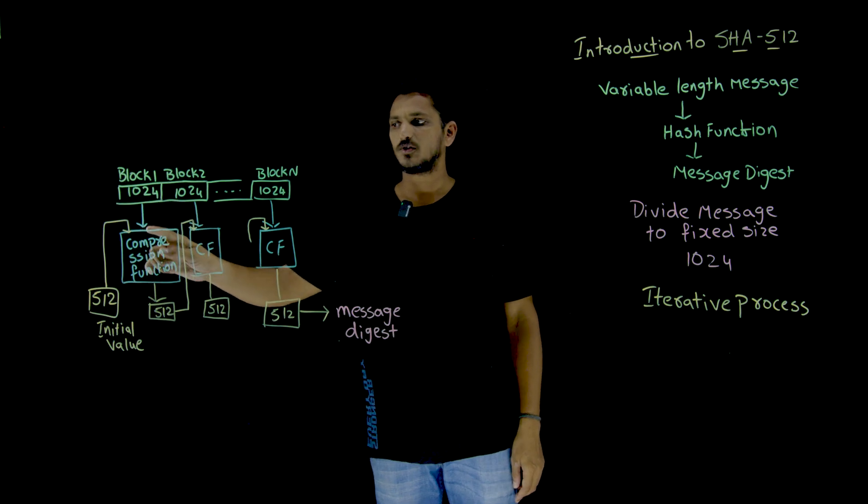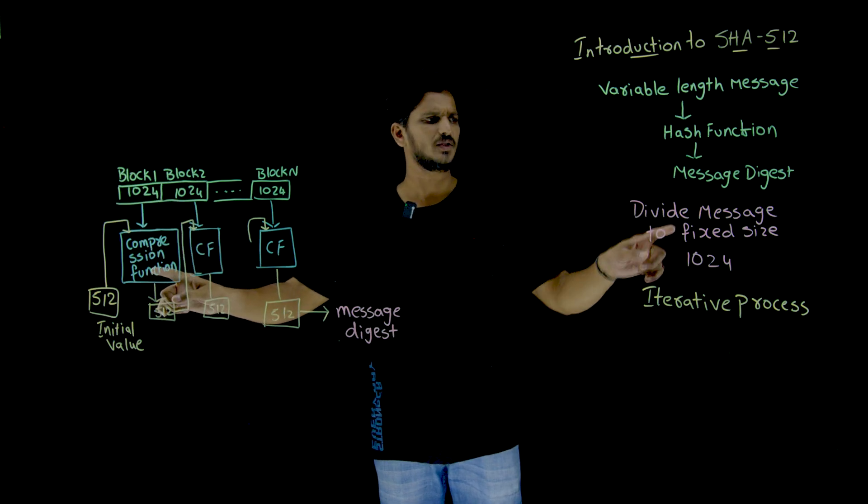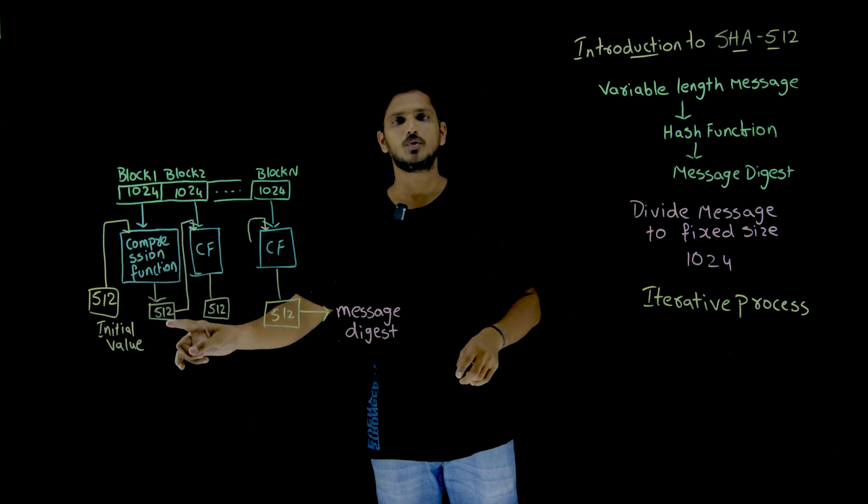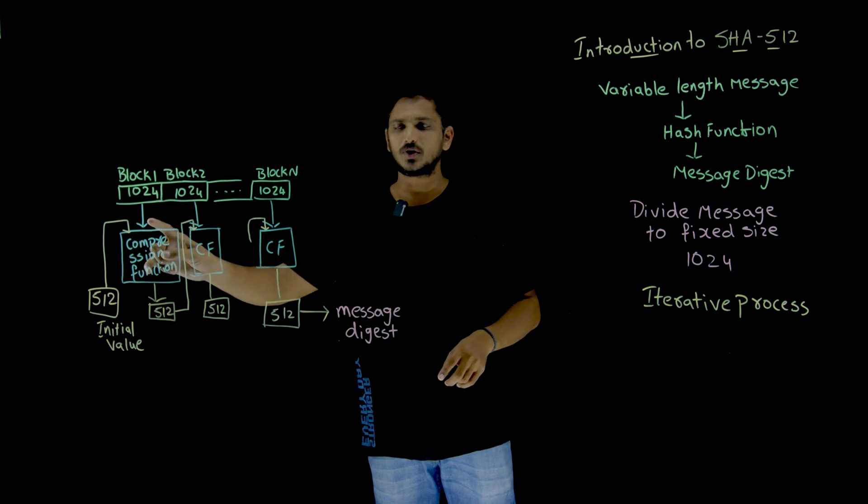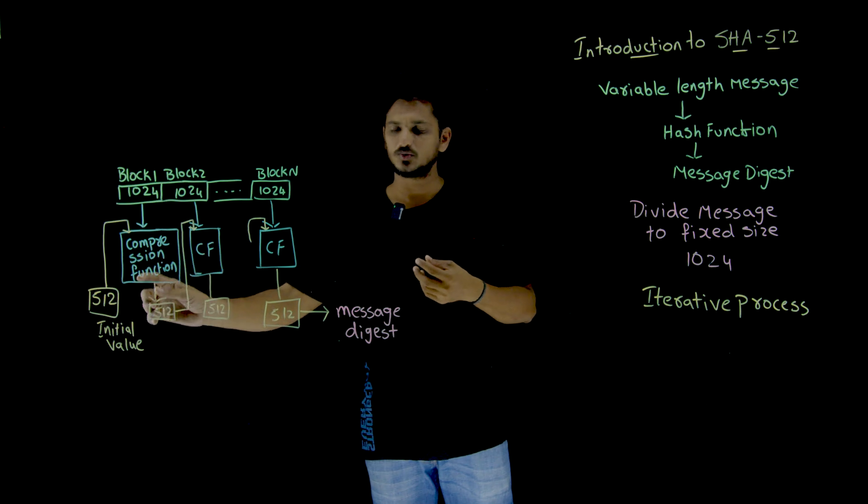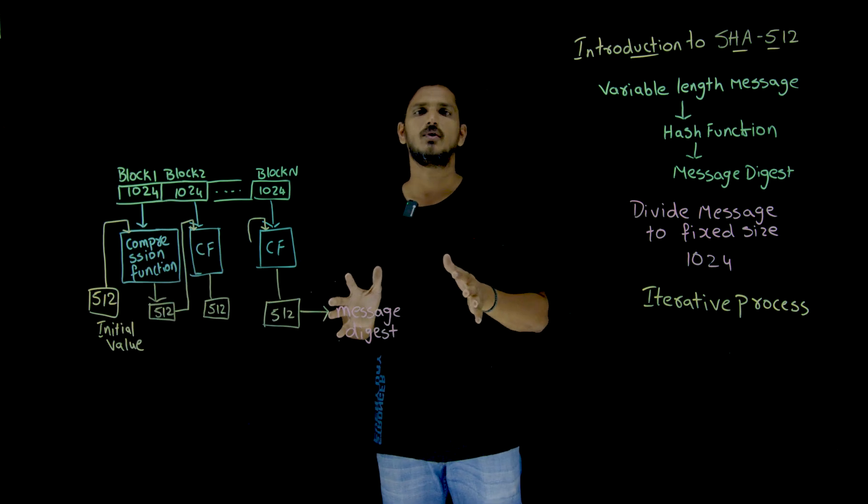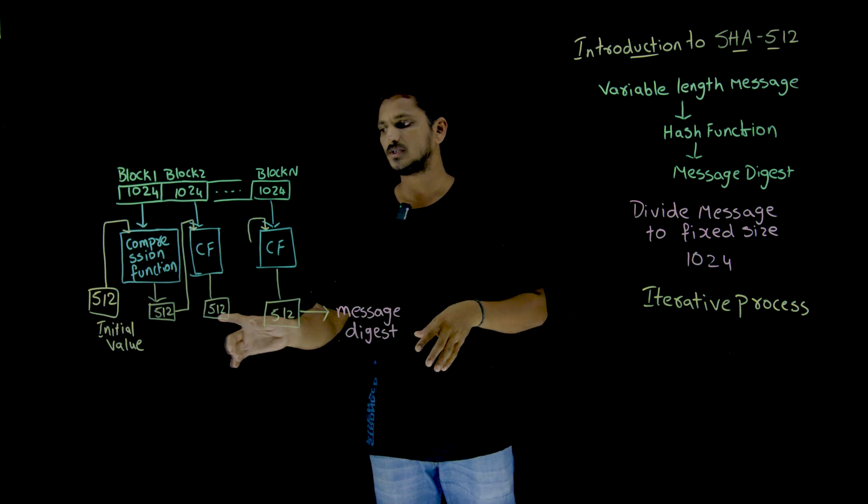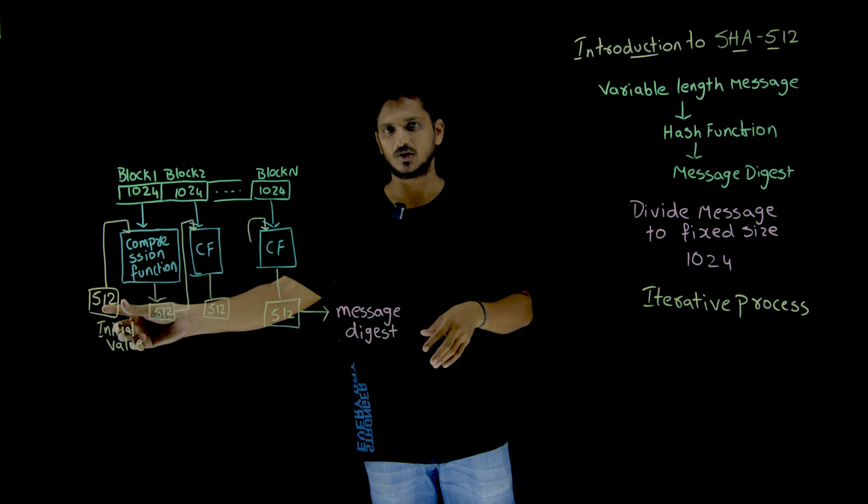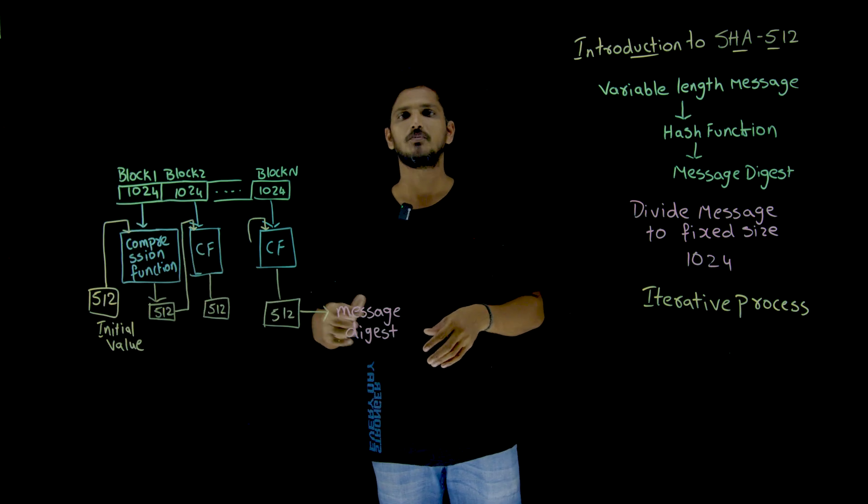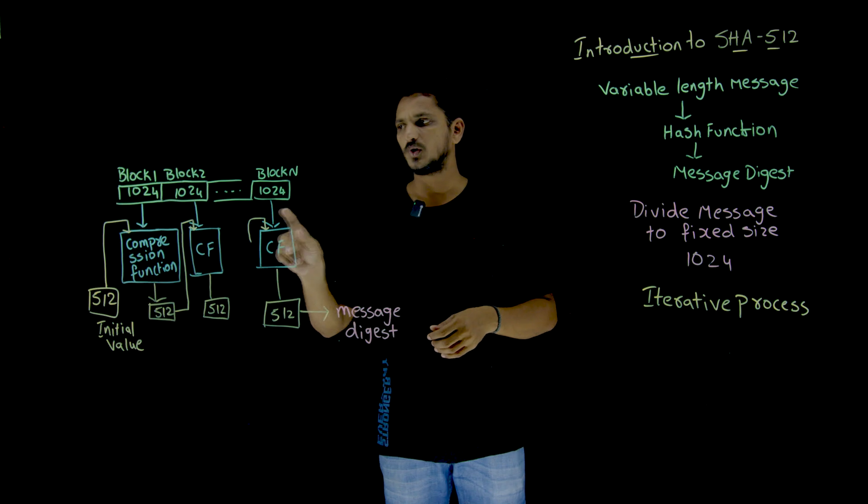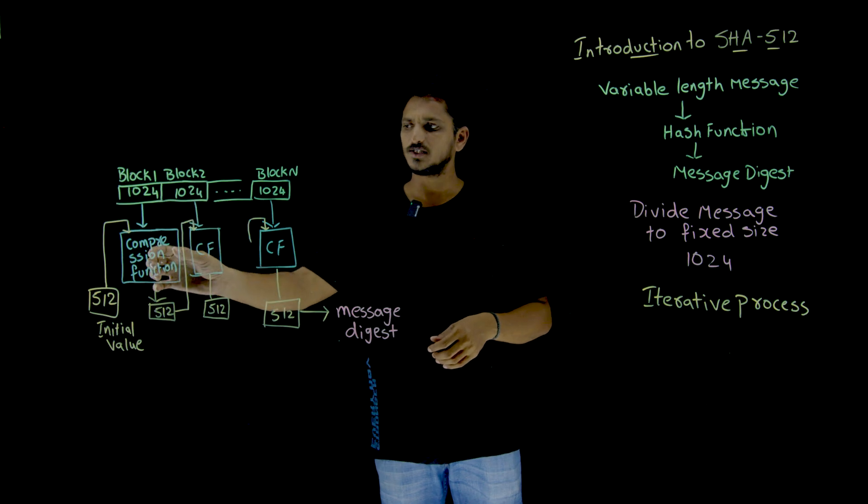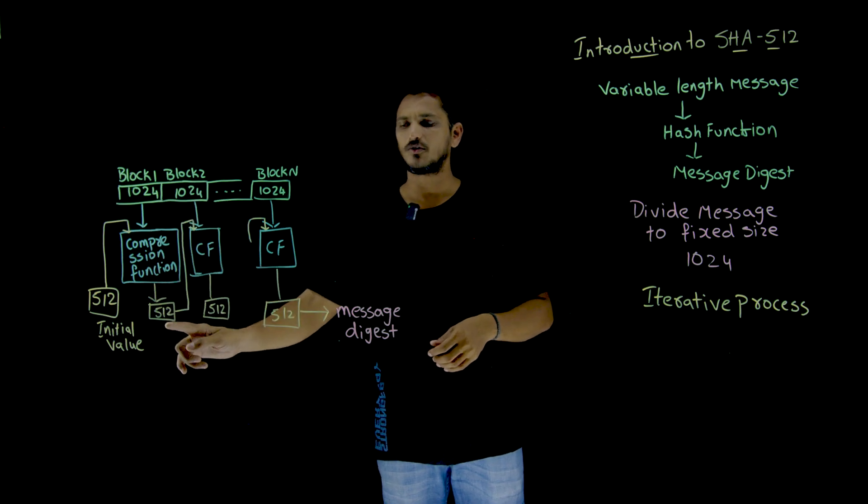So take the first block, 1024 bits, that sent into the compression function. Compression function means hash function. So something happens inside this and it is going to generate an output of 512. Along with this input 1024, we are going to take some initial value. This is a constant value. What initial value we have to consider, that we are going to understand in our coming classes. So we are going to take an initial value of 512 bits. This 512 is taken as input to the compression function. So two inputs we have: 1024 bit and 512 bit. By taking those two blocks as input to the compression function, it is going to generate an output of 512 bits.